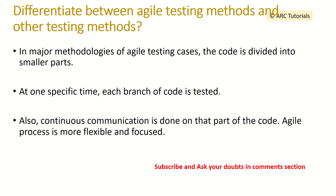Differentiate between agile testing methods and other testing methods. In agile, the code is divided into smaller parts or functionalities, each branch of code is tested at a specific time, continuous communication is done as part of the process, and the agile process is more flexible and focused compared to other major methodologies.